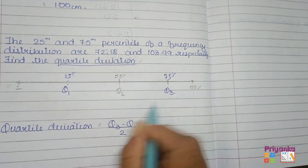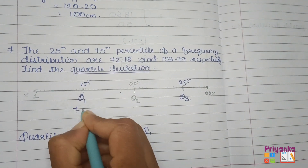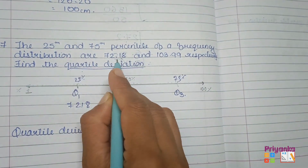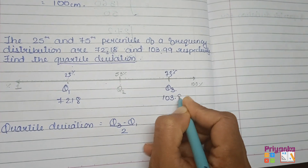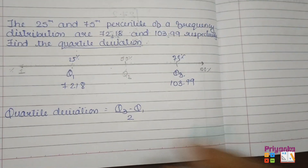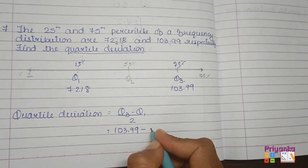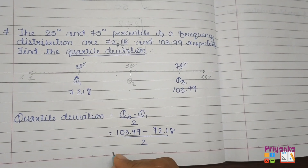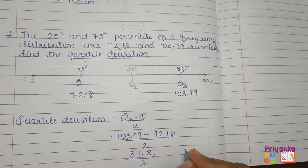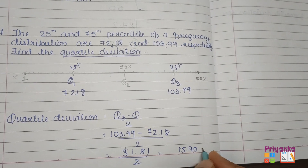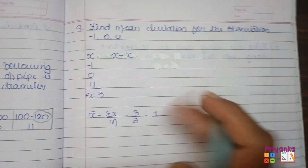The 25th percentile is 72.80, which is our first quartile Q1, and the 75th percentile is 103.99, which is our third quartile Q3. Using the formula for quartile deviation: 103.99 minus 72.80 divided by 2 gives us 31.19 divided by 2, and the answer is 15.90 (approximately 15.91).